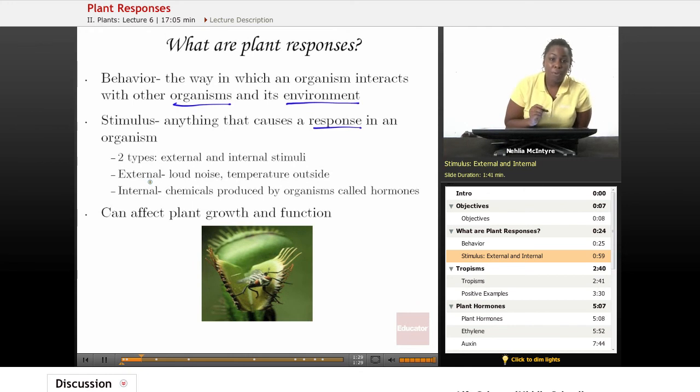Now, for all organisms, there are two different types of stimuli. Stimuli is just the plural word for stimulus. There's external stimuli, and those are things that stimulate the organism outside of itself. And then there's internal stimuli, and those are things that stimulate the organism within its own self.